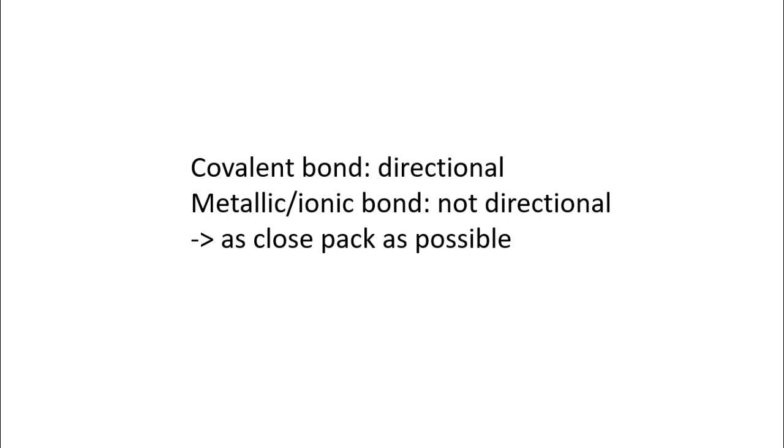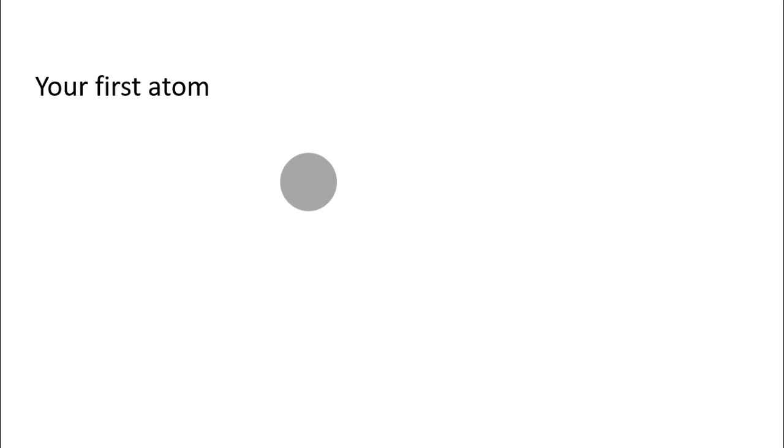Covalent bonds are usually directional and form more complex structures than cubic lattice. Metallic or ionic bonds are not directional, so they prefer close packing to reduce energy. So how to pack atoms as close as possible?